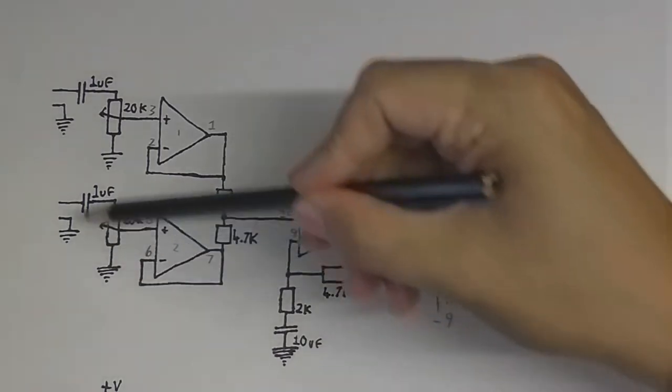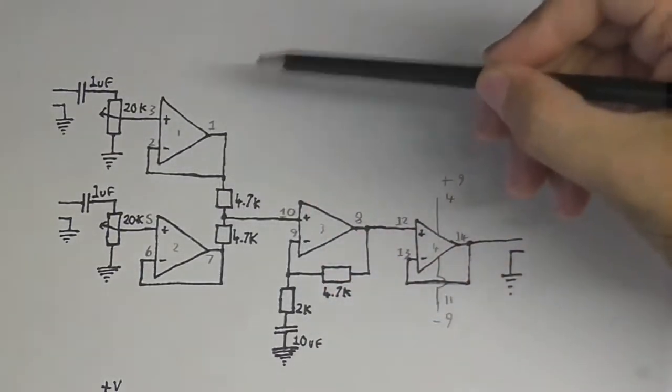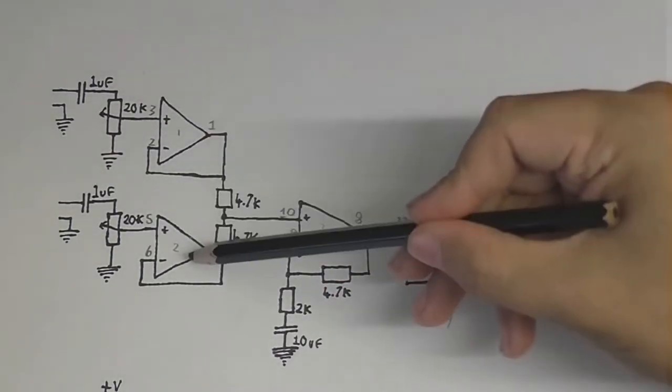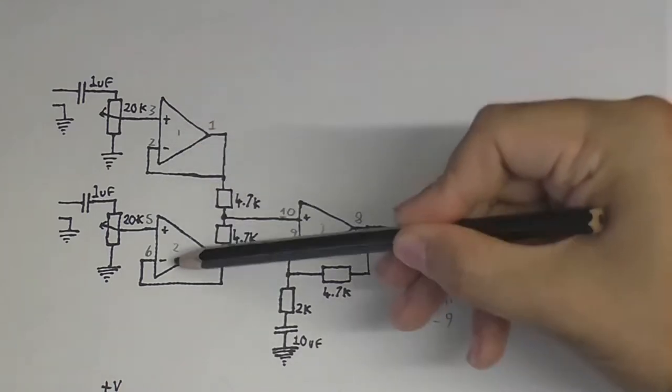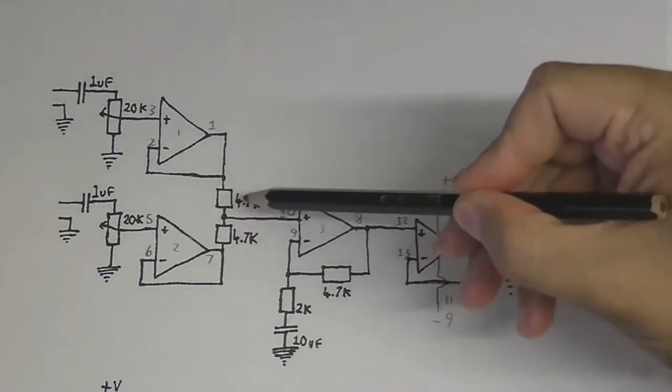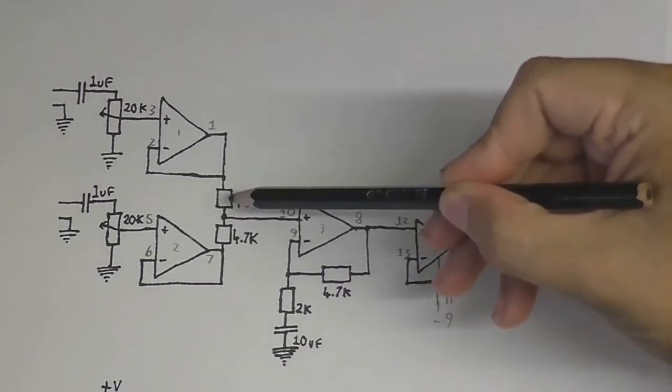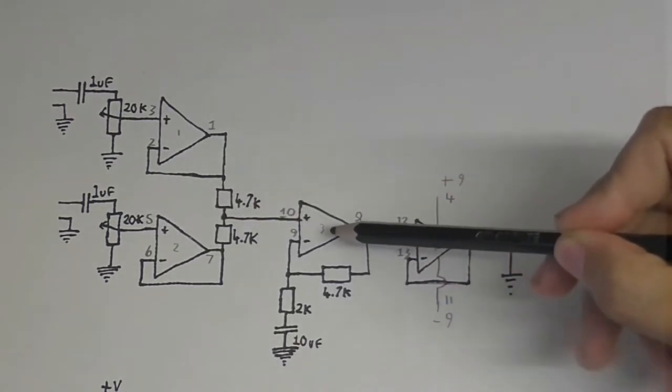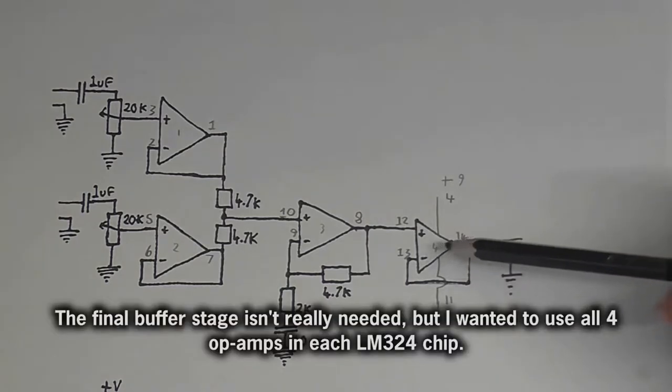So, what we've got here is our inputs, inputs one and two, and they go into an op amp buffer for each input. That way, they're not going to interfere with each other. And this is where the actual mixing takes place, with these two resistors here. Then it goes into this stage, gives it a little bit of amplification, and then finally into this buffer, and out to wherever it needs to go.